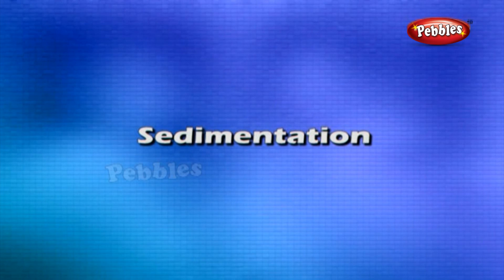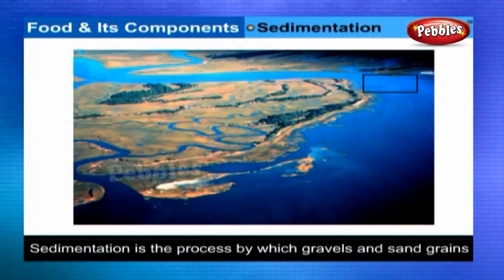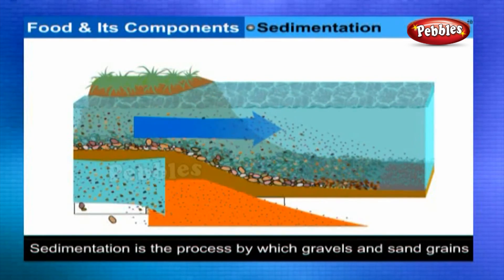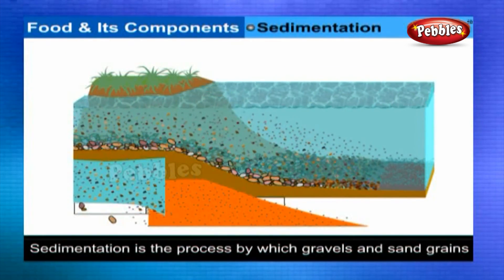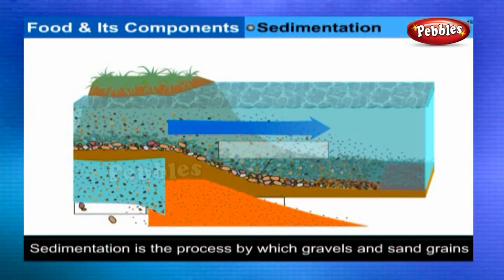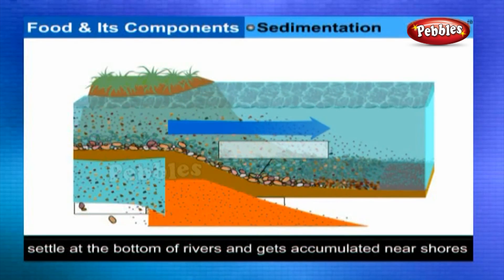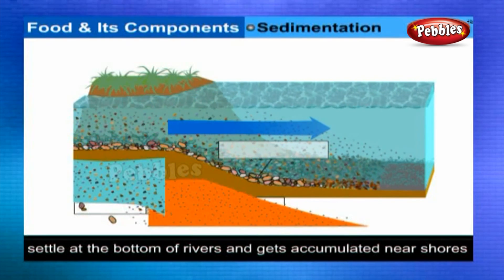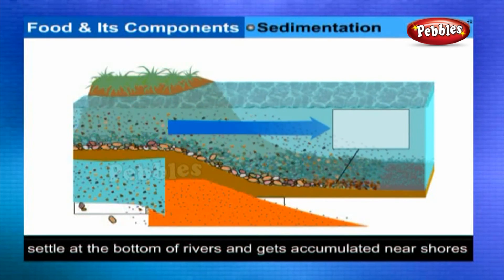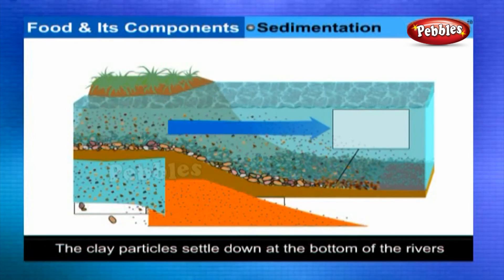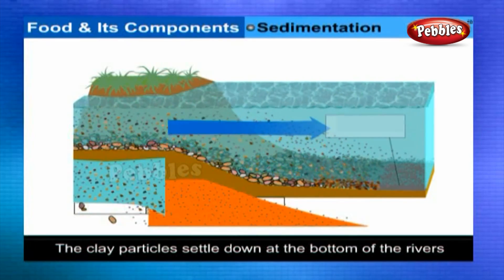Sedimentation: Sedimentation is the process by which gravels and sand grains settle at the bottom of rivers and get accumulated near the shores, while clay particles also settle down at the bottom of rivers.